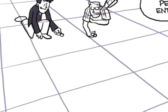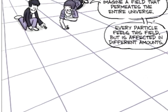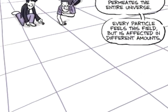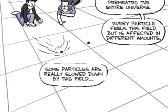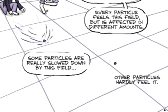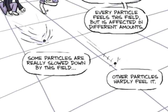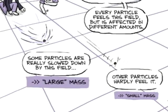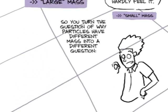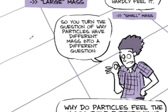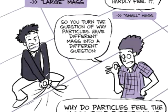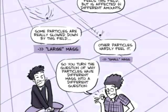The Higgs theory starts with this. Imagine a field that permeates the entire universe. And every particle feels this field, is affected by this field, in different amounts. So some particles are really slowed down by interaction in this field. Like swimming through molasses. And other particles hardly feel it. So the ones that hardly feel it, they have a small mass. The ones that are really affected by it, they couple strongly to this field, are slowed down a lot. They have a large mass. So you've turned the question of why do particles have different masses into a different question. Why do particles feel the Higgs field differently? But there is one manifestation of the field is the existence of this particle.